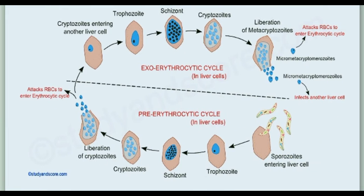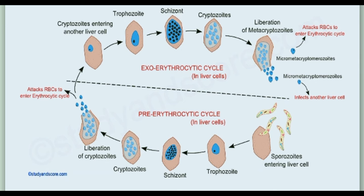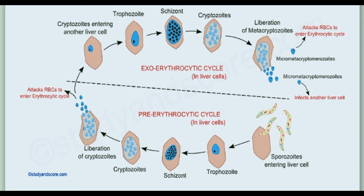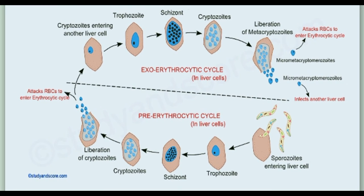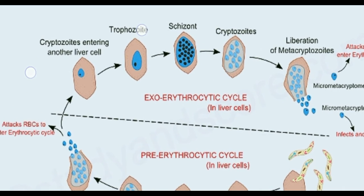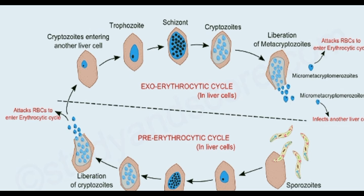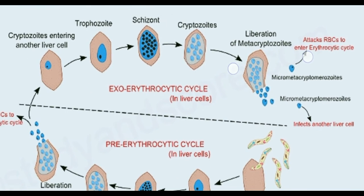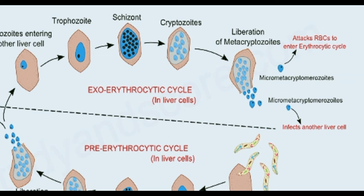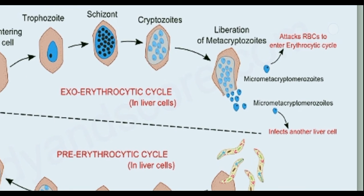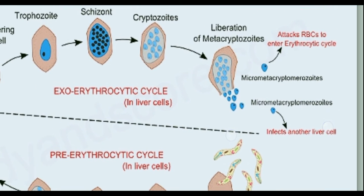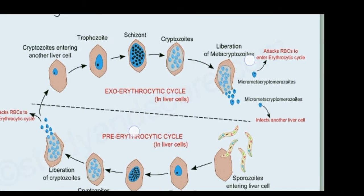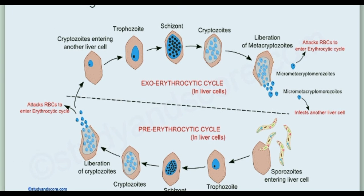For further clarity: the sporozoite enters liver cells, grows into a trophozoite state, then a schizont, and cryptomerozoites are formed and liberated. The cryptomerozoites enter another liver cell, and again trophozoite and schizont stages form. At last, metakryptomerozoites are released in the exo-erythrocytic cycle — micro and macro types. The micro type attacks RBCs to enter the erythrocytic cycle, and the macro type infects another liver cell and repeats the process.